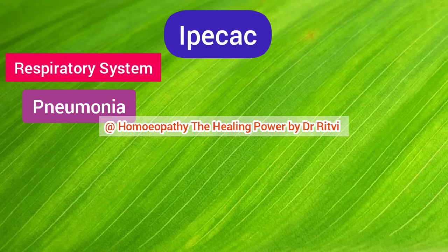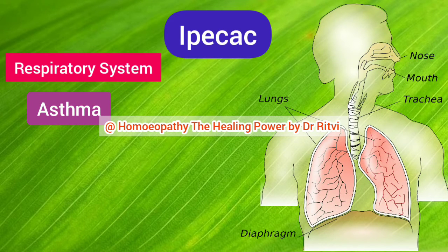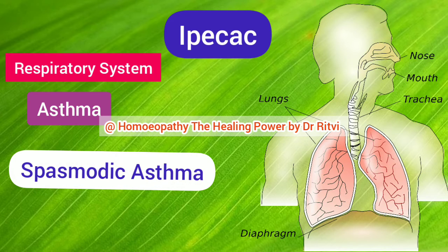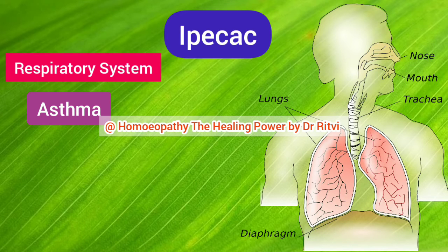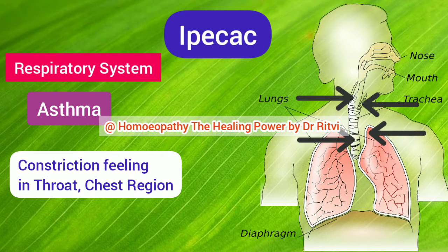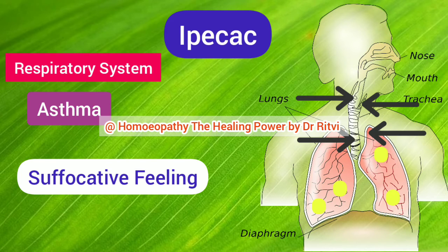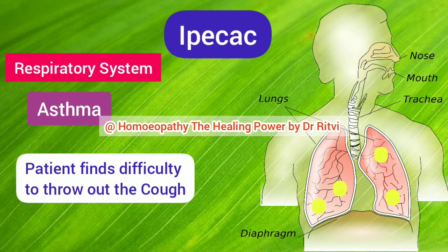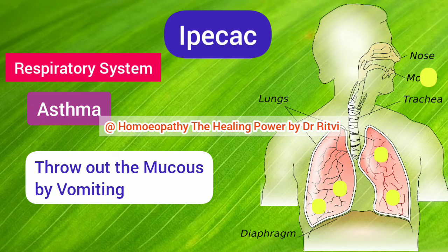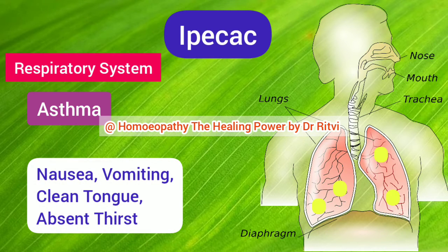Ipecac is also indicated in asthma. Since Ipecac acts on the pneumogastric nerve, it is very useful for spasmodic asthma. Patient complains of great constriction feeling in the throat and chest region. There is great accumulation of mucus in the chest giving rise to a wheezing sound, and sometimes the accumulation threatens suffocation. Due to this emphysematous condition, the patient finds it difficult to expectorate, but still manages to throw out the mucus by coughing or vomiting. Along with this cough there is nausea and vomiting. Clean tongue with absence of thirst is seen, and all complaints are aggravated by motion.